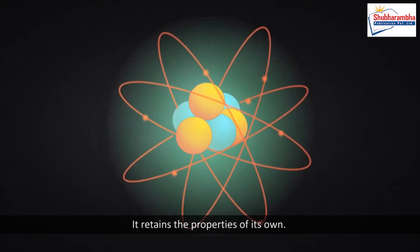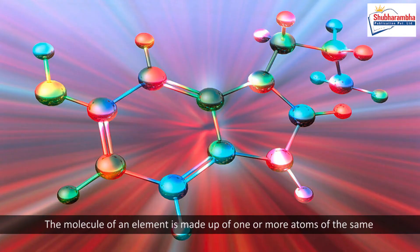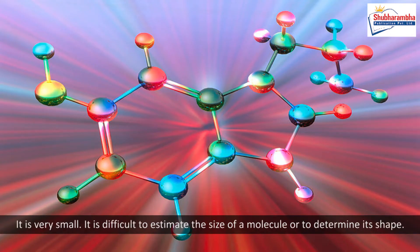Molecule. It retains the properties of its own. The molecule of an element is made up of one or more atoms of the same type, while the molecule of a compound is made up of similar atoms. It is very small. It is difficult to estimate the size of a molecule or to determine its shape.